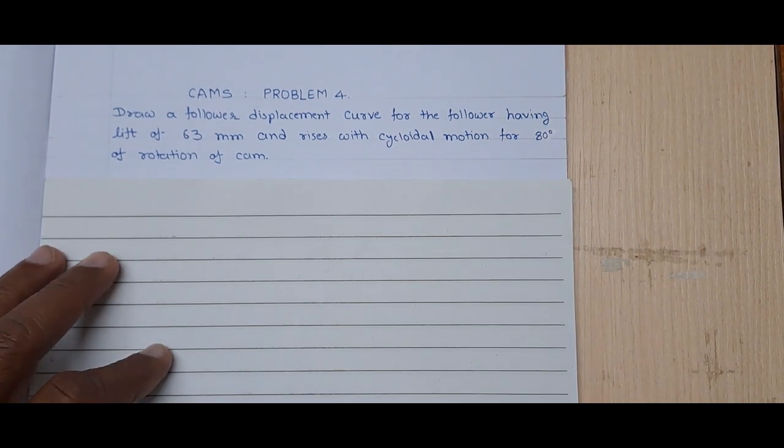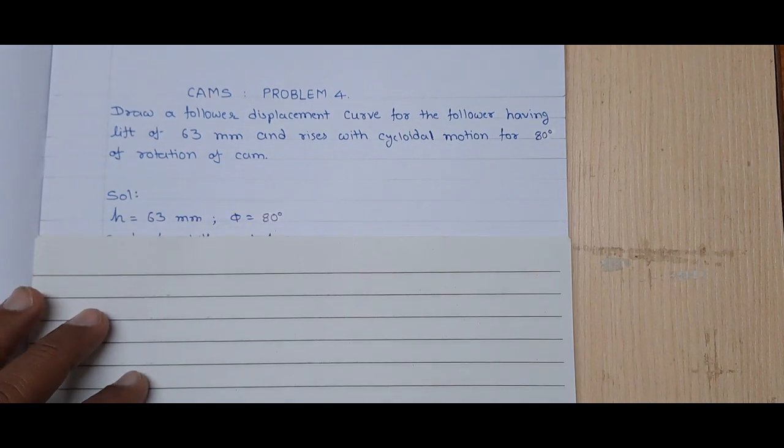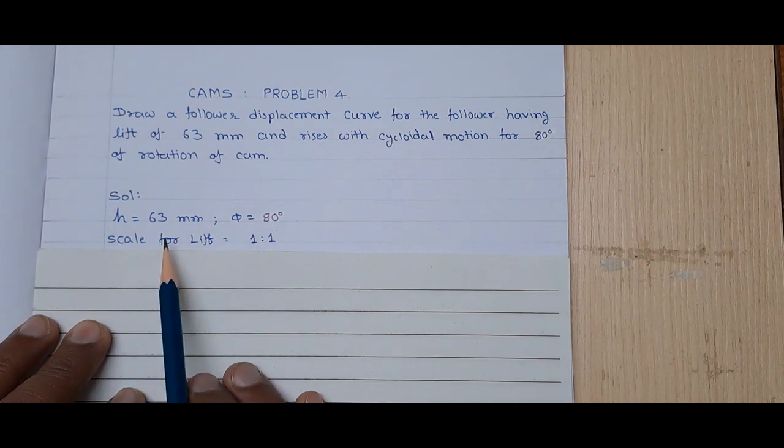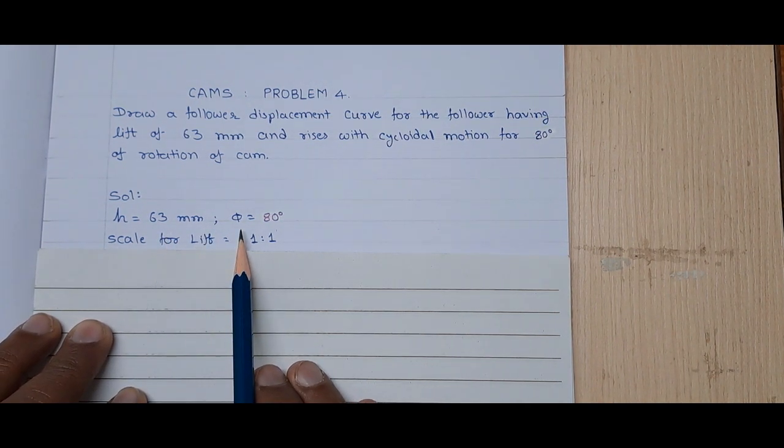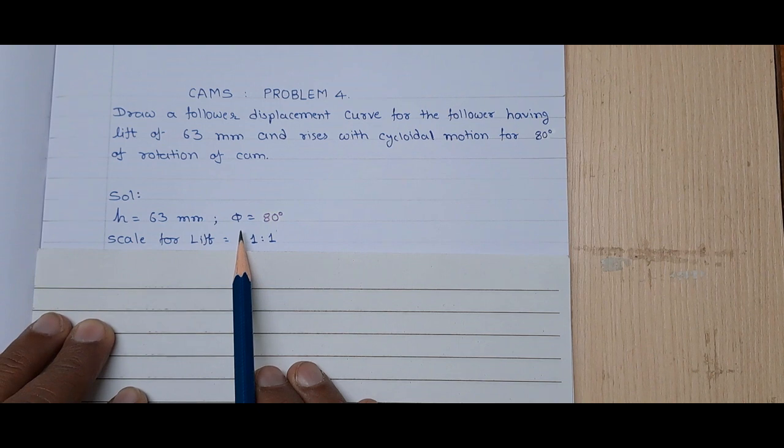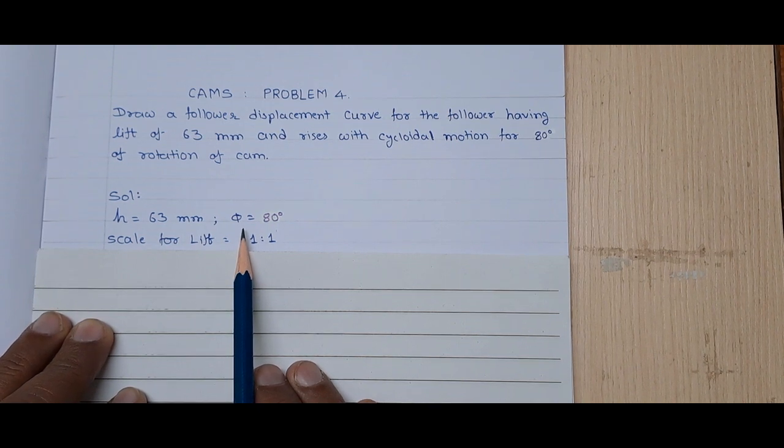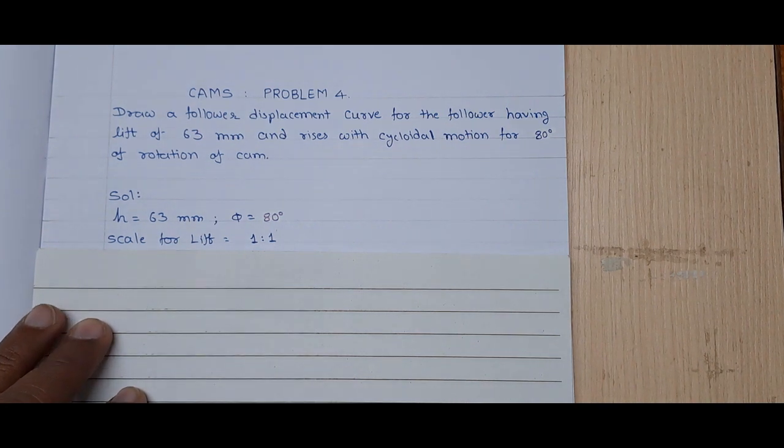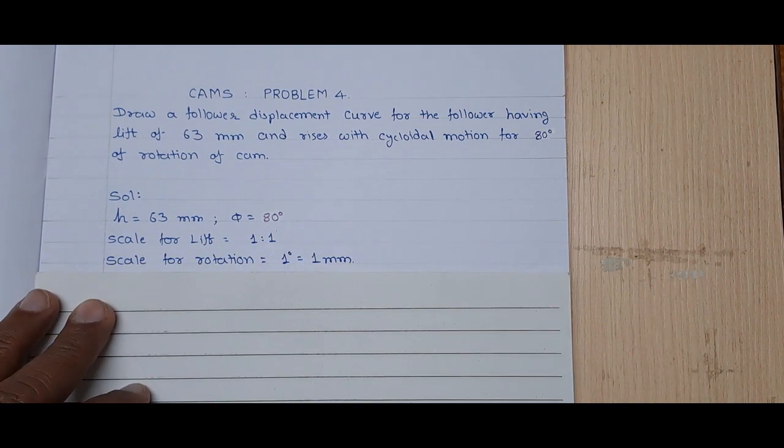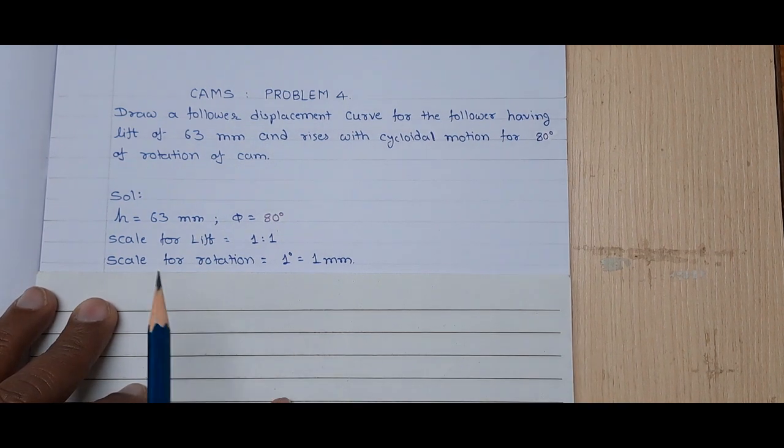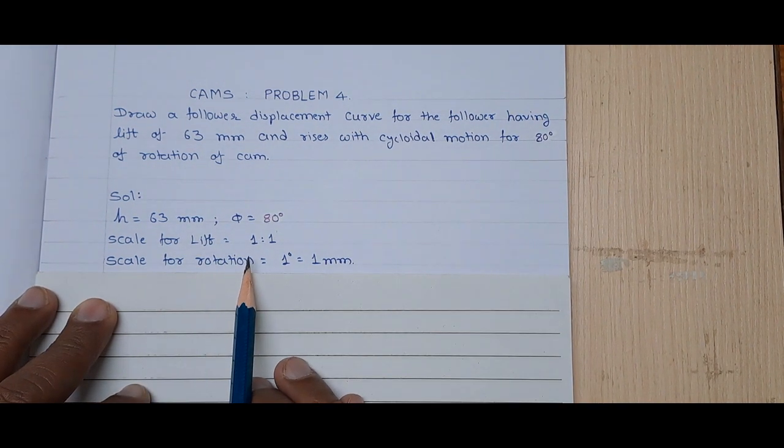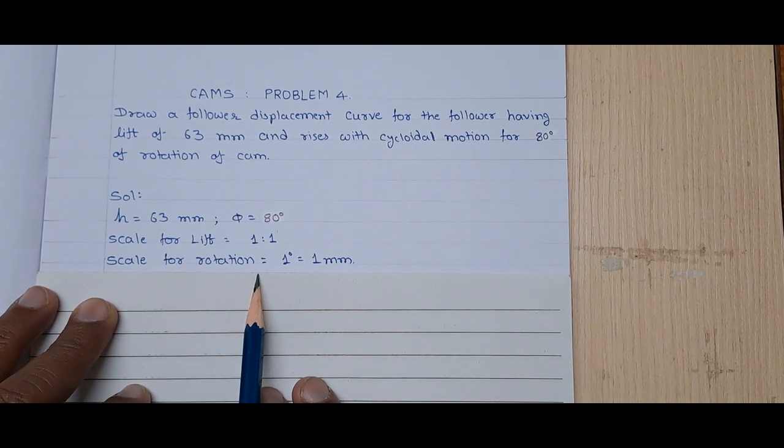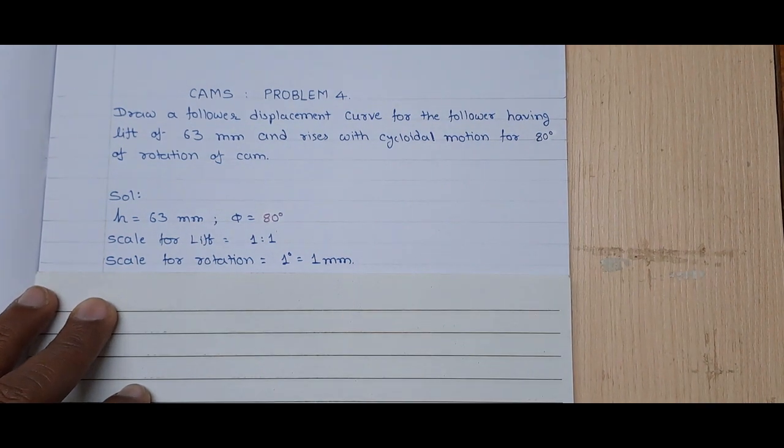Friends, let us note down the given information. Here, the lift is given, h is equal to 63 mm, and the rotation of CAM, that is angle of ascent, is given phi equal to 80 degrees. To draw the displacement curve, let us take the scale. Scale for lift we are considering 1 is to 1, and scale for rotation we are considering 1 degree is equal to 1 mm.